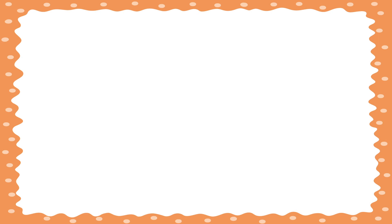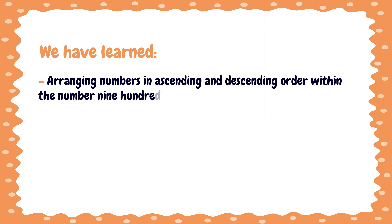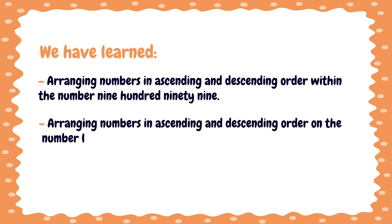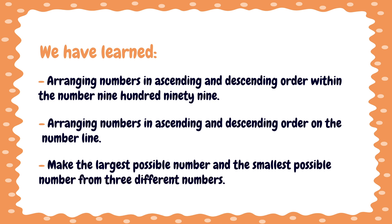With this, my dear students, we have learned arranging numbers in ascending and descending order within the number 999, arranging numbers in ascending and descending order on the number line, and how to make the largest possible number and the smallest possible number from three different numbers. Thank you so much.